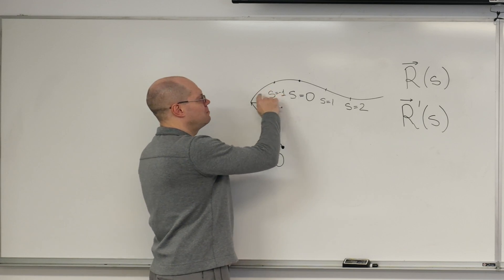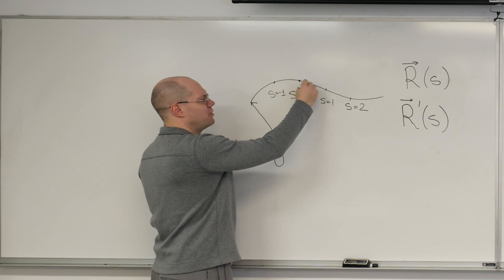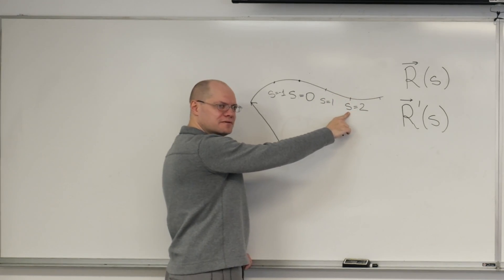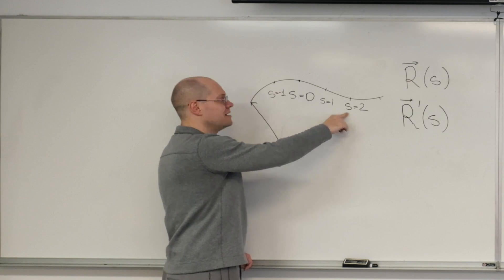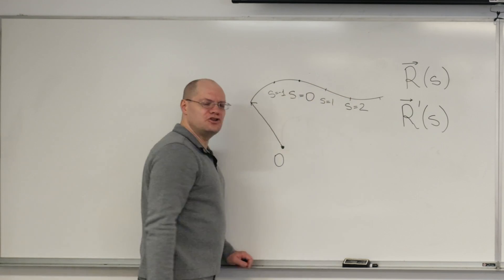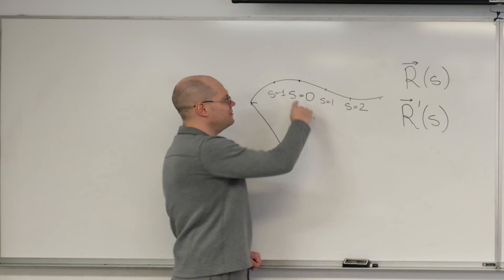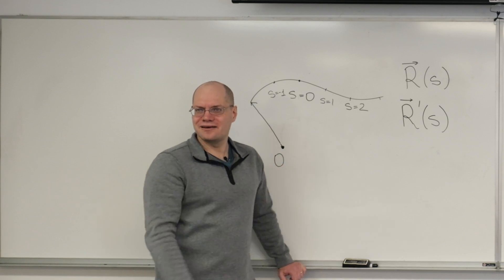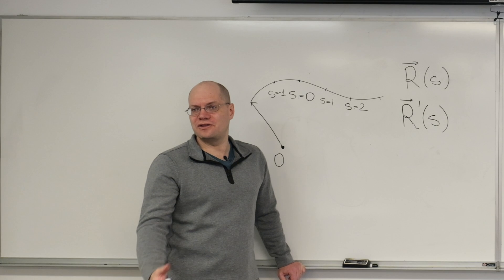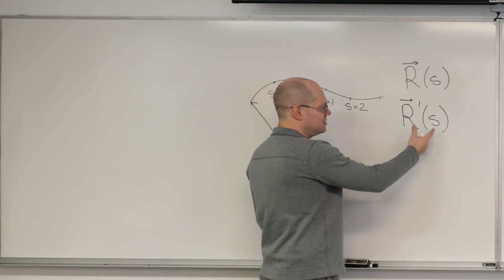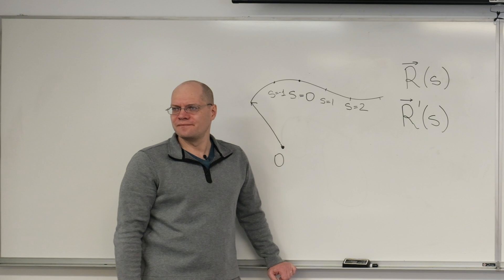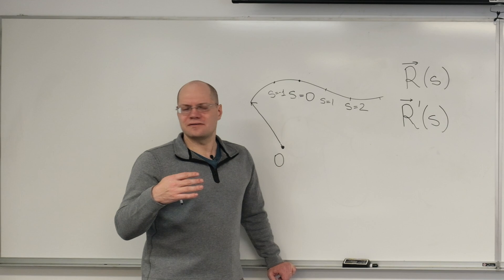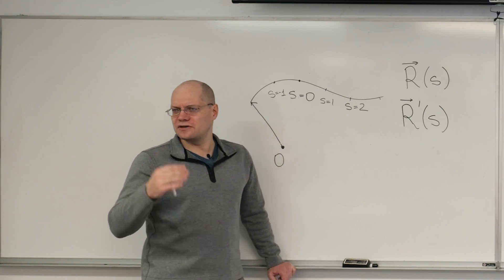And it kind of makes sense. I'll break it down a little bit more. If you think of this as a material particle moving along this, and S corresponds to time, as well as arc length, then it's really moving with unit speed, because it's traveling one meter in one second, or one unit of length in one unit of time. And so it's moving with unit velocity, and so this derivative would have to be length one. This vector would have to be length one.